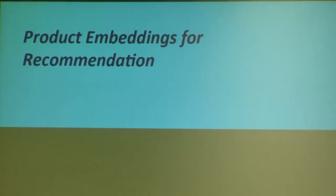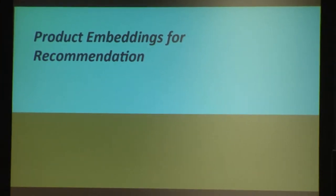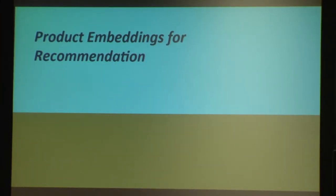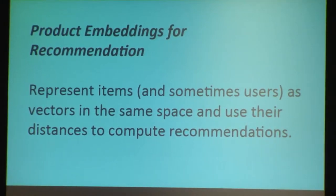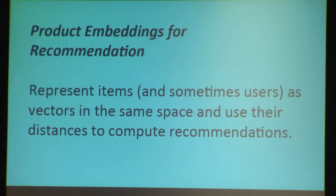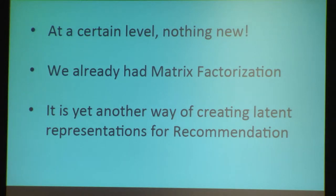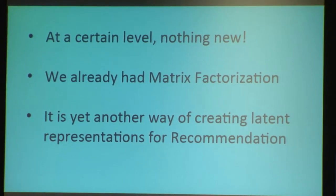For product embeddings for recommendation: at the beginning of the conference, the chair was covering the change in tags for papers, noting that last year there was no paper on deep learning and this year there are plenty. Why is this a good idea? At the core, we represent items and possibly users in the same space and compute their distance to get recommendations. This is nothing new — we had matrix factorization techniques before.